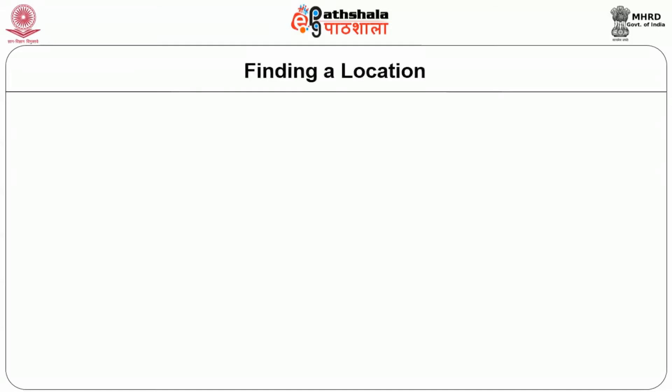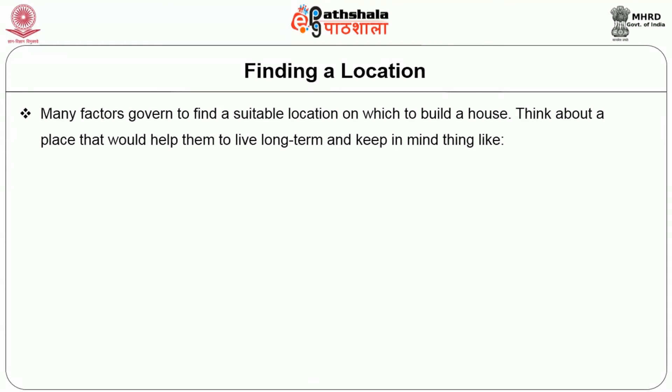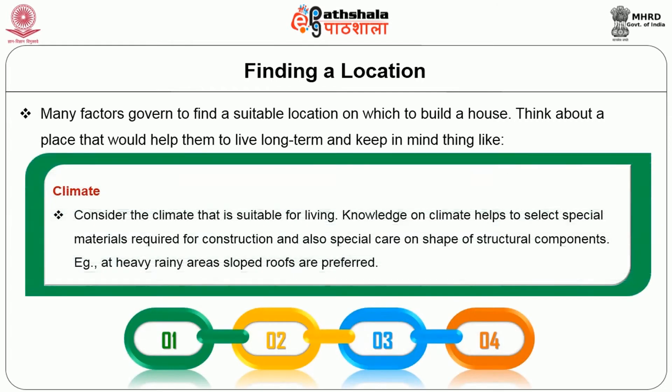First is finding a location. Many factors govern finding a suitable location on which to build a house. Think about a place that would help you live long term. Consider the climate suitable for living — knowledge on the climate helps to select special materials required for construction and special care on the shape of structural components. For example, in a heavy rain area, sloped roofs are preferred.